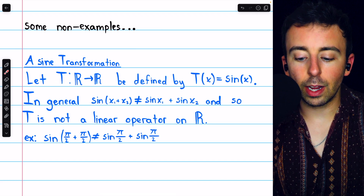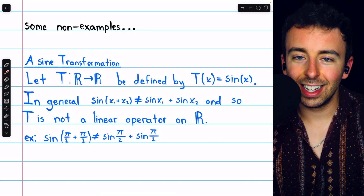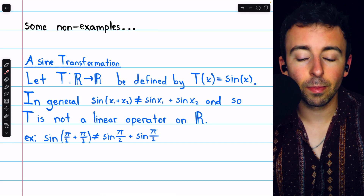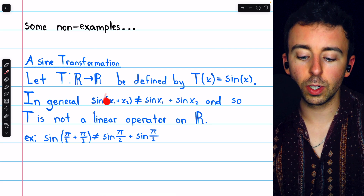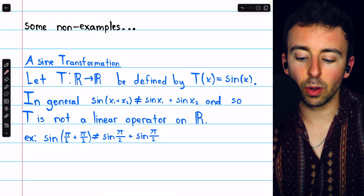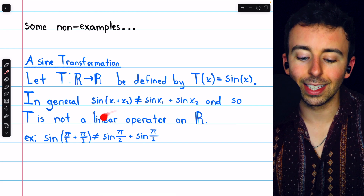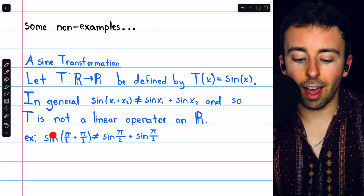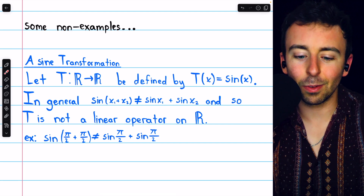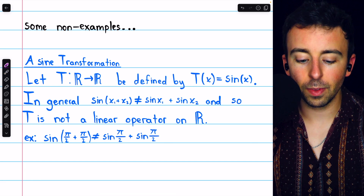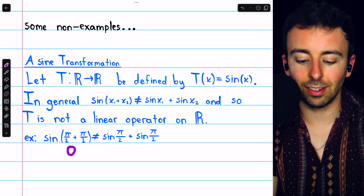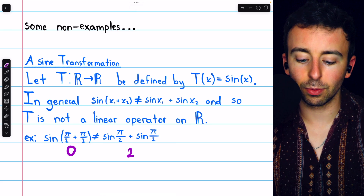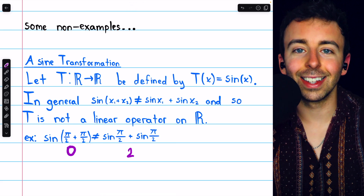A basic non-example is the sine function. If T maps each real number x to sine of x, this is not a linear transformation because the additivity property fails — in general, sine of a sum of two real numbers is not the sum of their sines. For a specific counterexample: sine of (π/2 + π/2) equals sine of π, which is 0, whereas sine(π/2) + sine(π/2) equals 1 + 1 = 2. Clearly this is not a linear transformation.